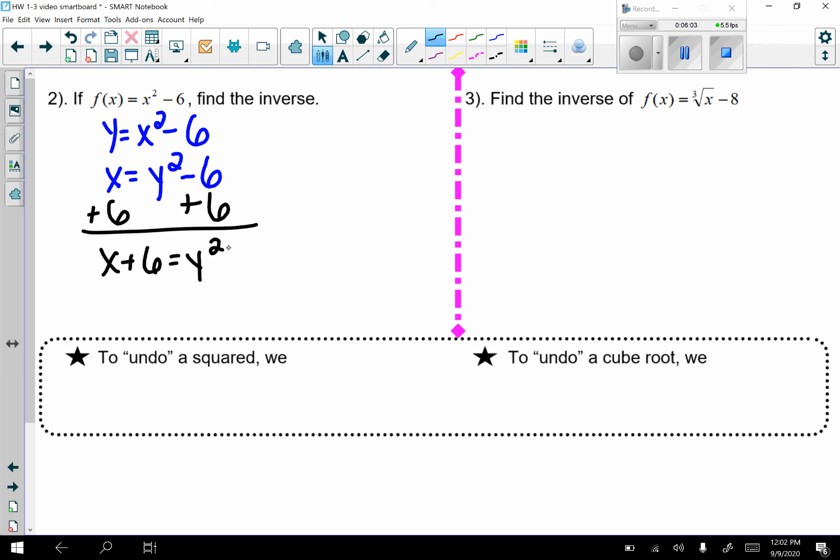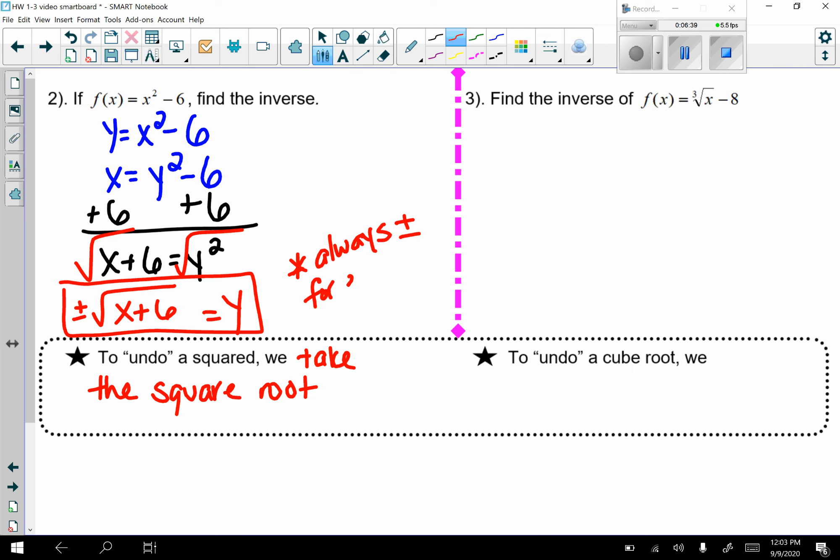We have x plus 6 equals y squared. And now I am going to undo a squared. So in order to undo a squared, we are going to take the square root. And whenever you are taking the square root, whatever I do to one side, I have to do to the other. So I get y equals. But I want to make sure I do a plus and a minus. With a square root or any even root, square root, fourth root, sixth root, it's always a plus minus. Never with the odd. So always plus minus for even roots. Just keep that in mind.